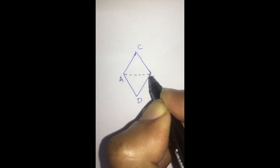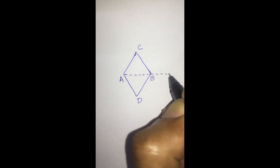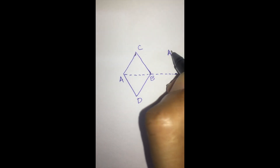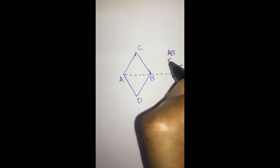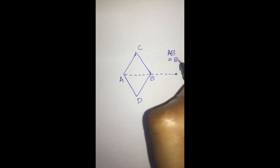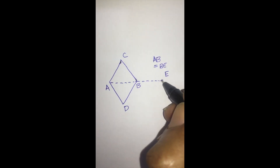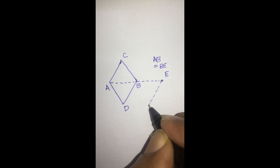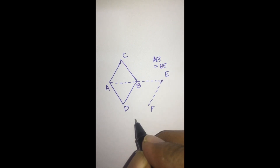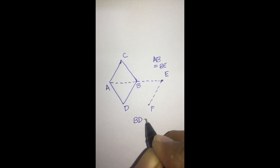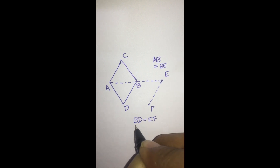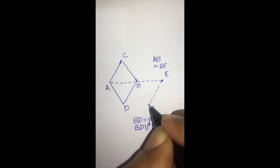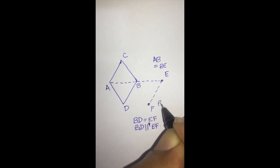Once the defect has been created in the form of a rhombus ABCD, the short diagonal AB is extended to a point E where the distance AB is equal to BE. From the point E, a parallel line is drawn to the line BD and equal in length to the line BD, up to a point called F. So BD is equal to EF in length and BD is parallel to the line EF. This point F is the pivot point of the rhomboid flap.